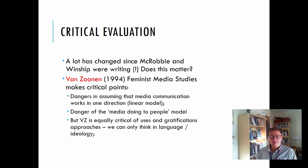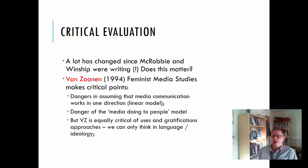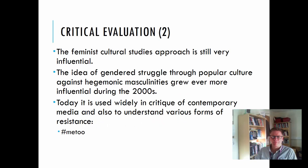A lot has changed since McRobbie and Winship were writing. By 1994, Van Zoonen argued in Feminist Media Studies, making a number of critical points. She looked at the danger of assuming that media and communication works in one direction — a linear model from the centre to the individual — and the idea that media is simply done to people. Van Zoonen also advocates drawing upon post-structuralism: that we can only think in terms of language and ideology, and that we need to go far deeper in our analysis, looking not just at the superficial ways these codes operate, but at the very language used to articulate these codes.